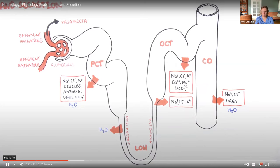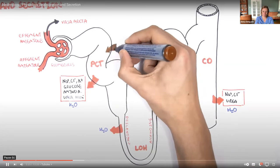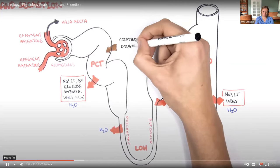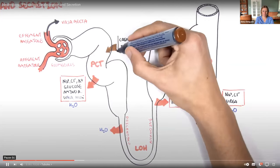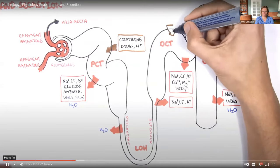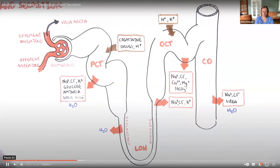[Video] Different segments of the nephron also allow for secretion of things back inside the tubule from the circulation — specifically from the vasa recta. The proximal convoluted tubule allows secretion of creatinine, certain drugs, and hydrogen ions. The distal convoluted tubule allows secretion of hydrogen ions and potassium.